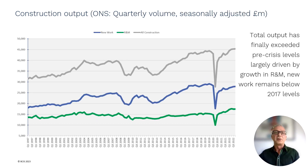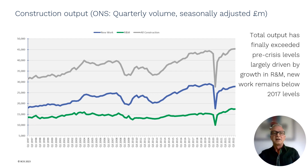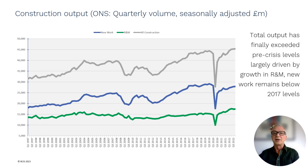Looking at construction output, the chart shows new work, repair and maintenance, and total output over the last 25 years. Since our last webinar, I can report that total output has finally exceeded pre-crisis levels, and this has largely been driven by growth in the repair and maintenance sector. New work remains below 2017 levels. New work output is also much more volatile than repair and maintenance, being directly linked to levels of investment, and given the current economic headwinds, we expect new work output to decline going forward.